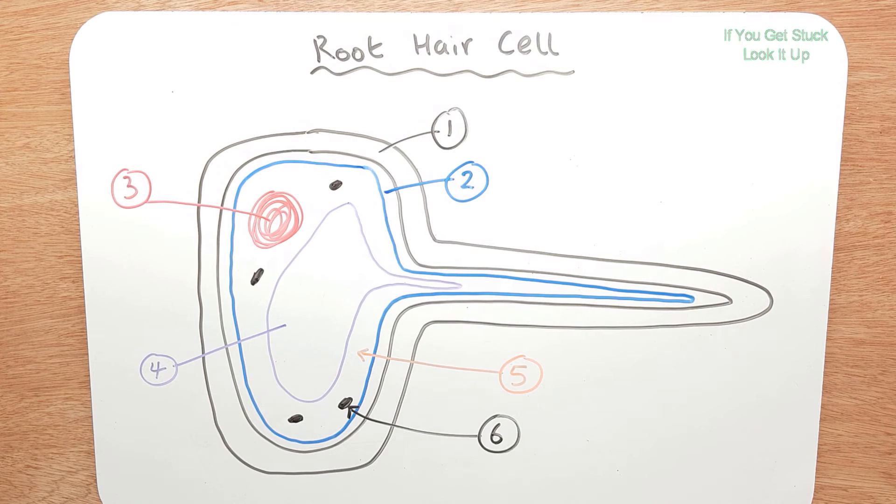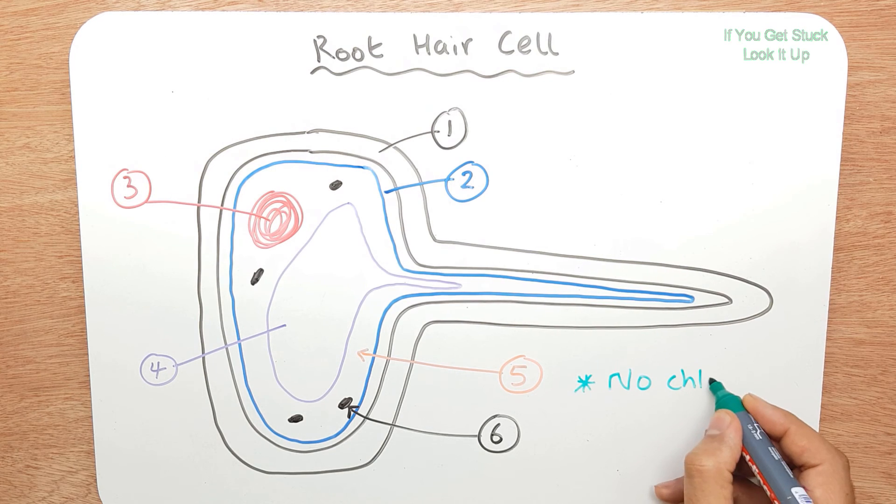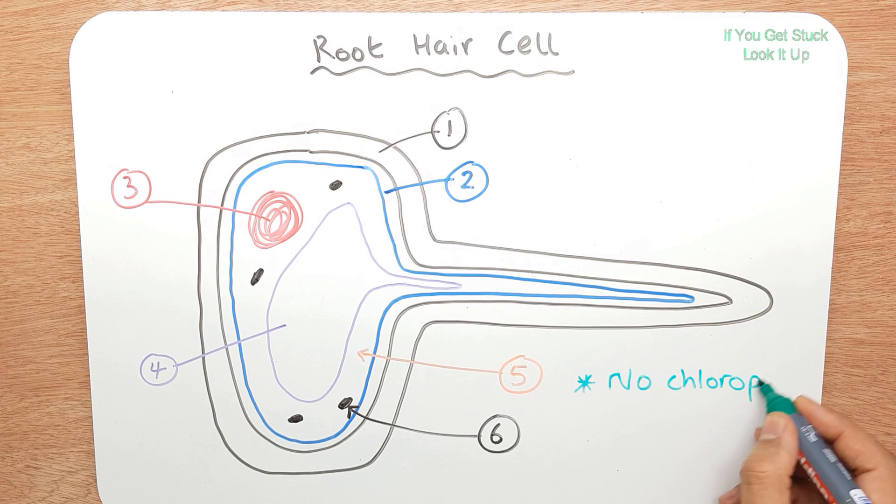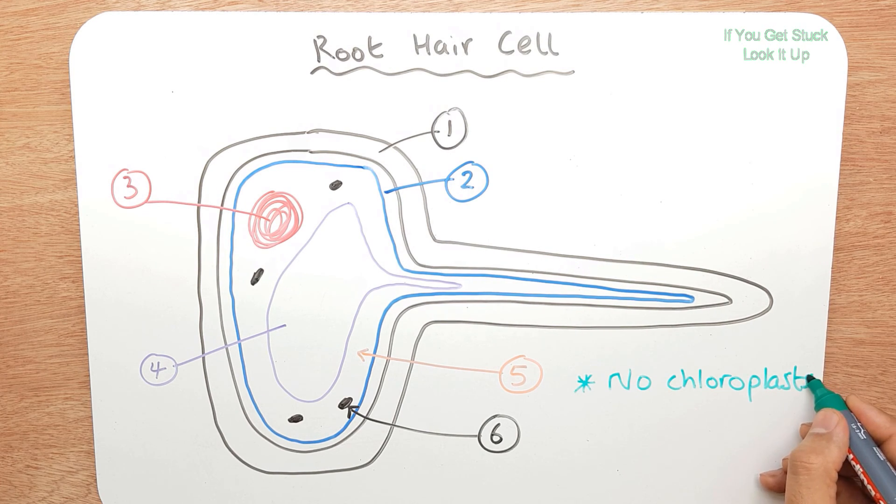And finally, one more point: root hair cells do not contain any chloroplasts because there's no advantage. There's no sunlight underneath the soil.